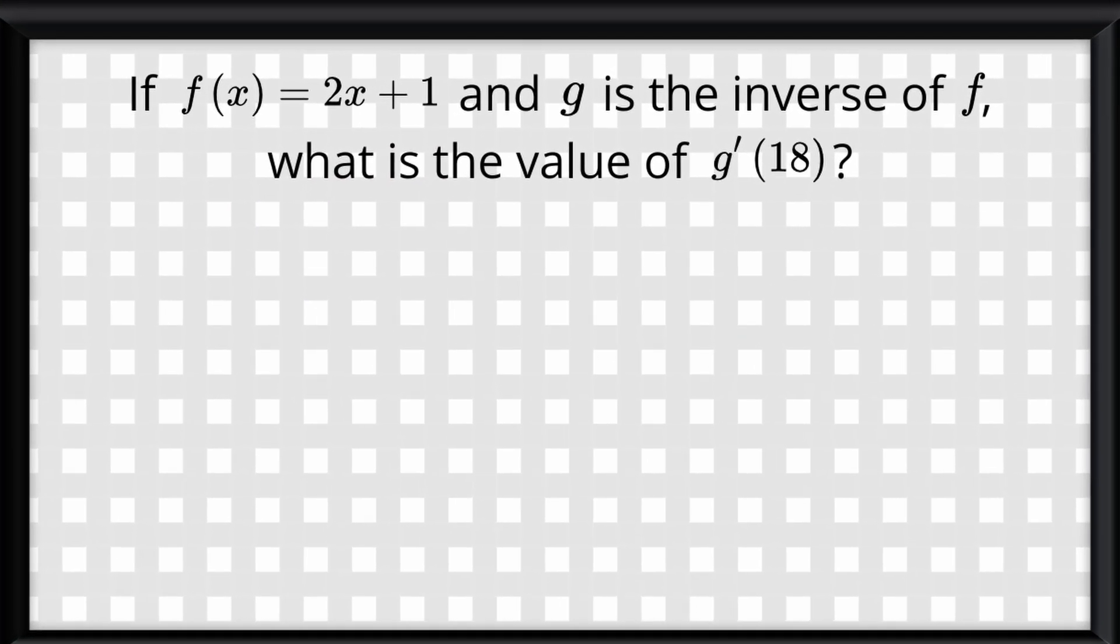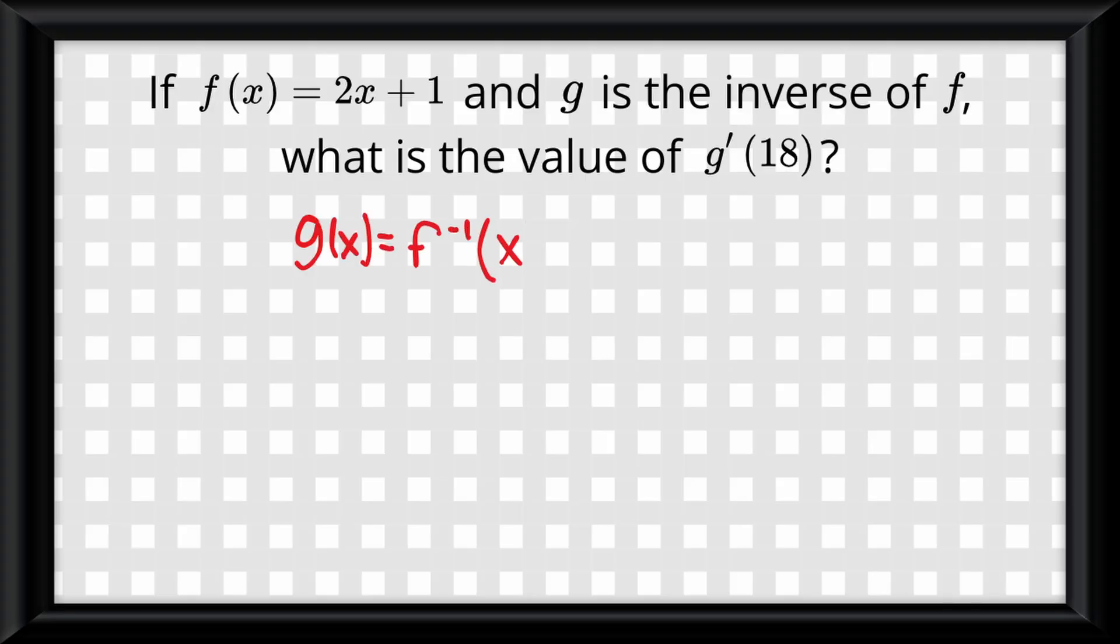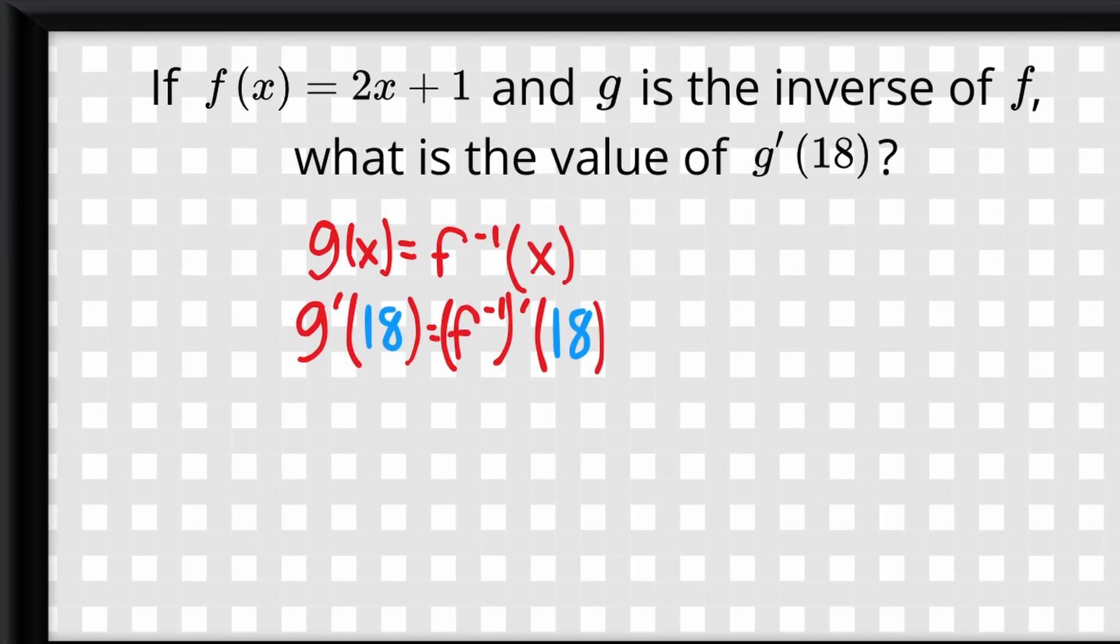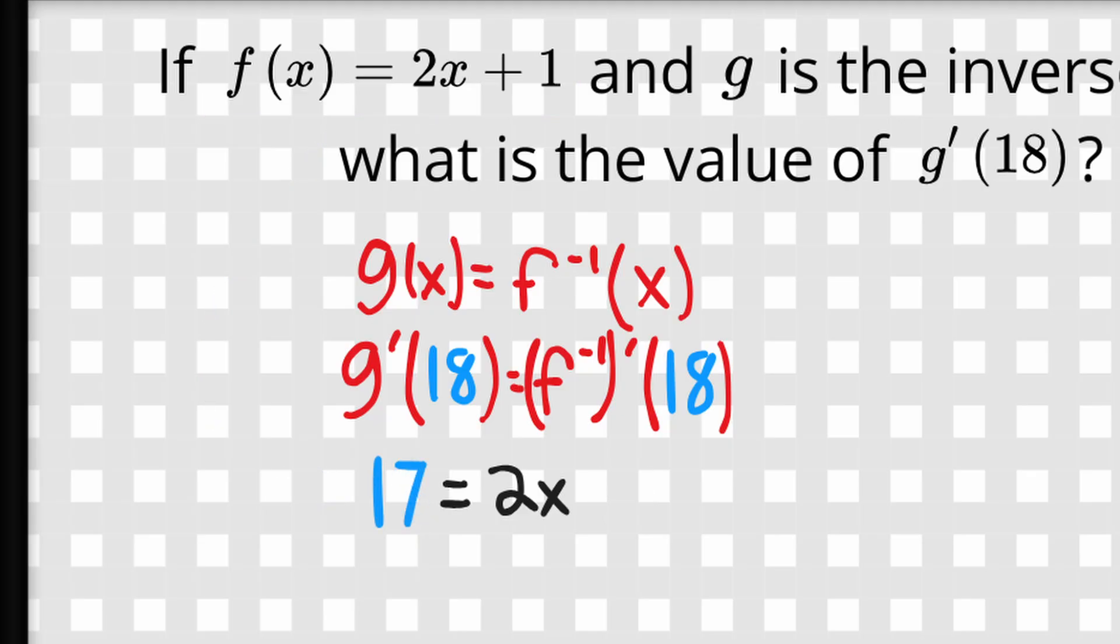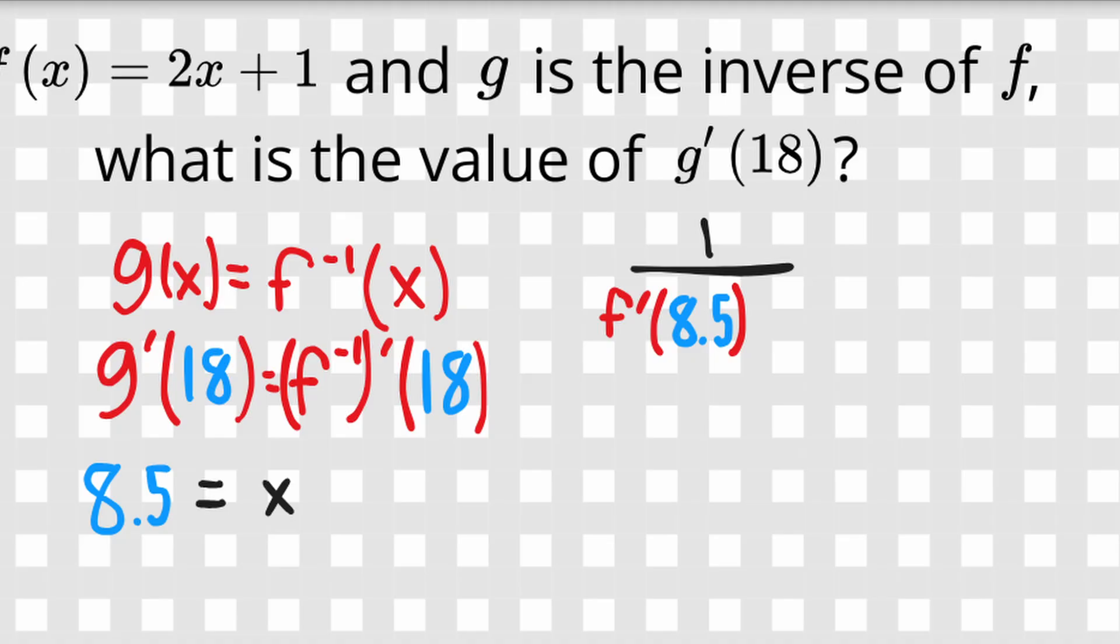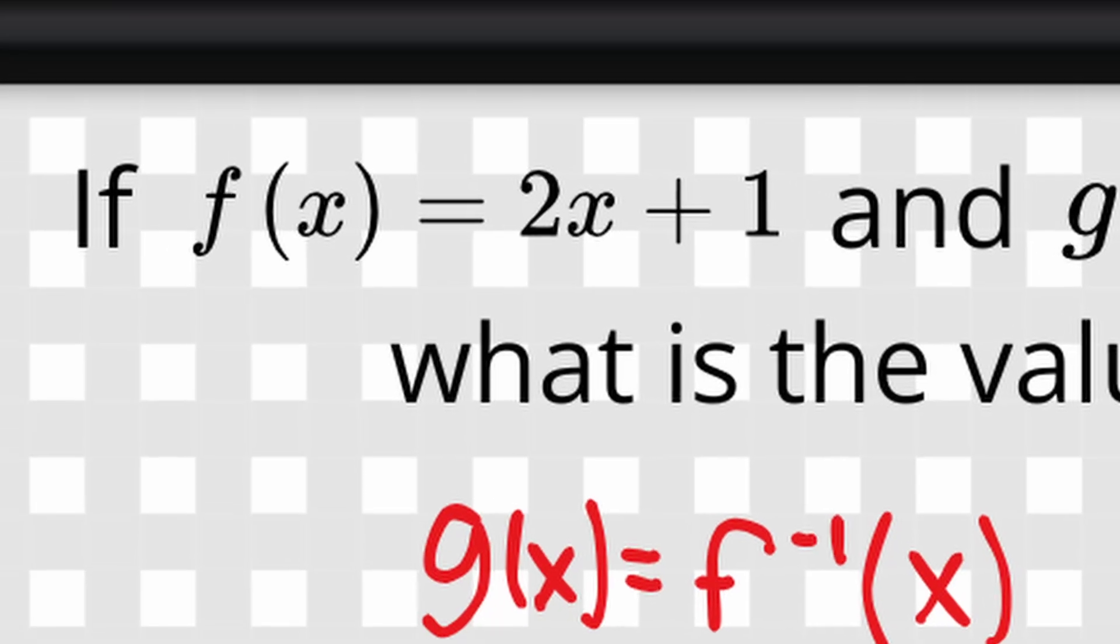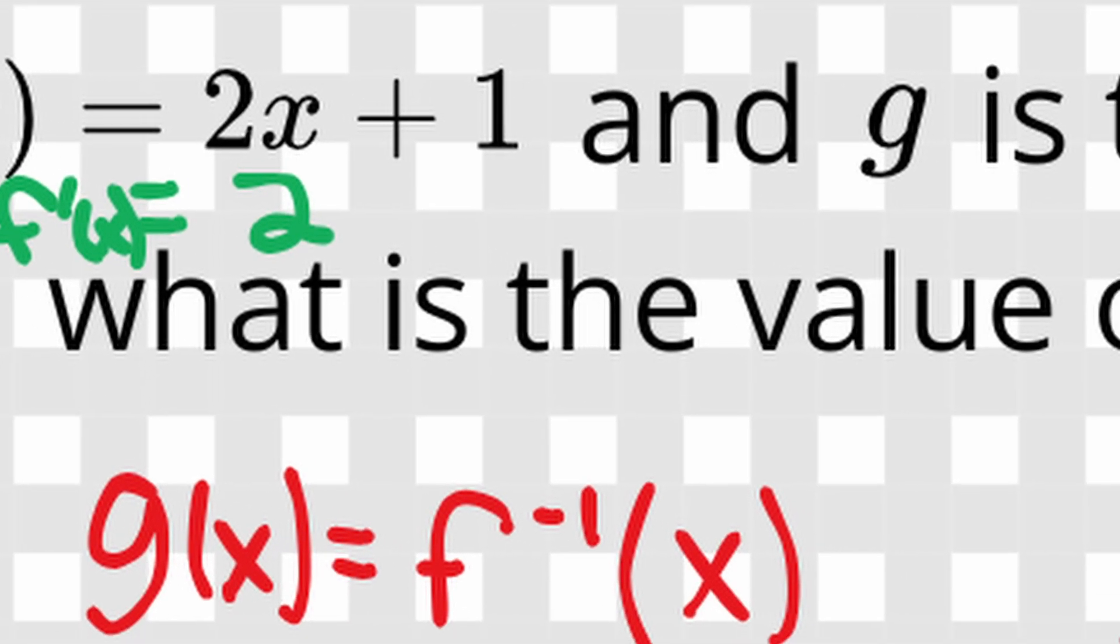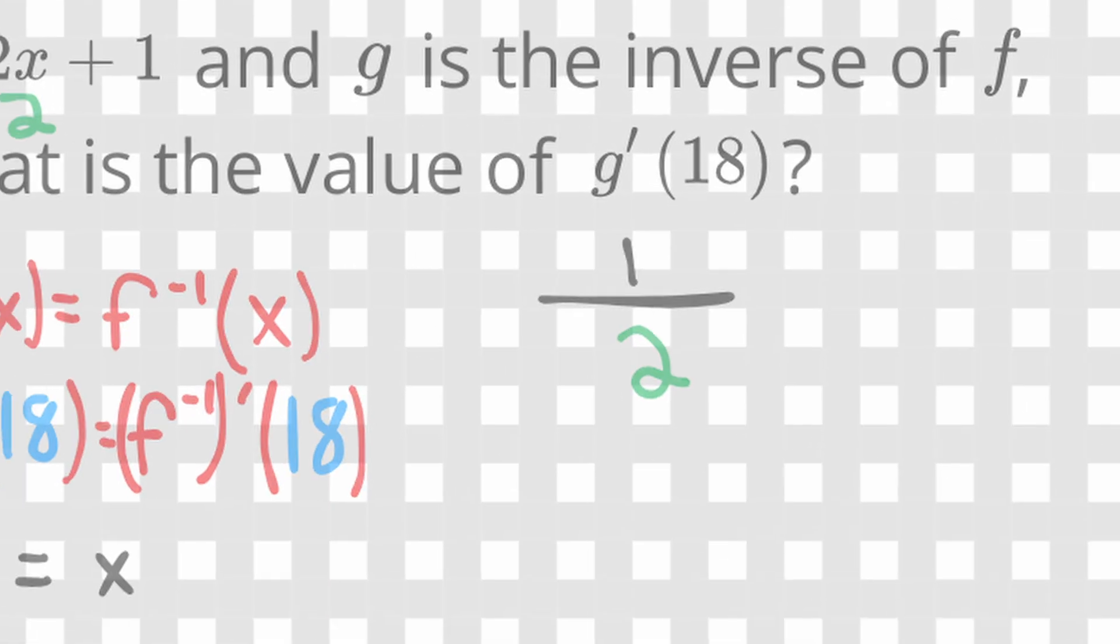But what about this problem? If f of x equals 2x plus 1 and g is the inverse of x, what is the value of g prime of 18? So the first thing we need to do is rewrite this. Since g of x is really f to the negative 1 of x, we can rewrite g prime of 18 as f to the negative 1 prime of 18. So that means we need to first plug in 18 for the y value in the function, so for f of x. Then we simplify, and solving for x, we get 8.5. Now we plug it into the inverse derivative formula, and we get 1 over f prime of 8.5. However, since this is a linear function, the derivative will always be one number, and in this case, it is 2. So that means f prime of 18, or rather anything in this linear function, is 2. So our answer is 1 over 2.